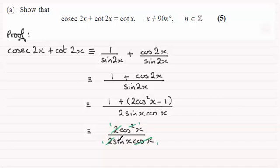And we're left with cos x over sin x, in other words cotangent, or cot x for short. And that proves what we had to show.